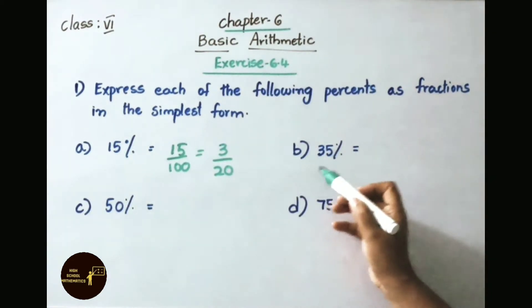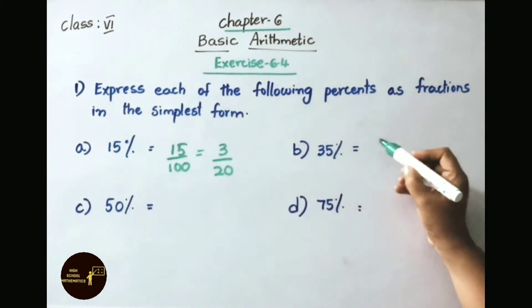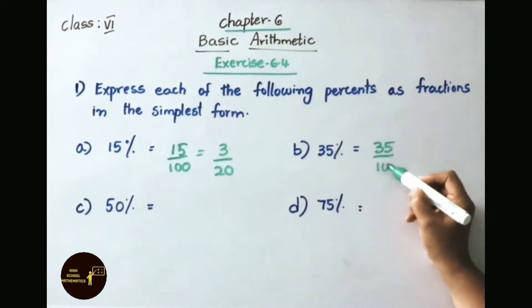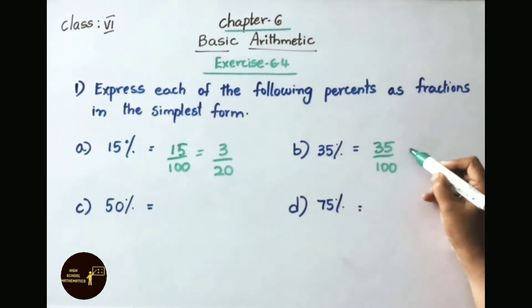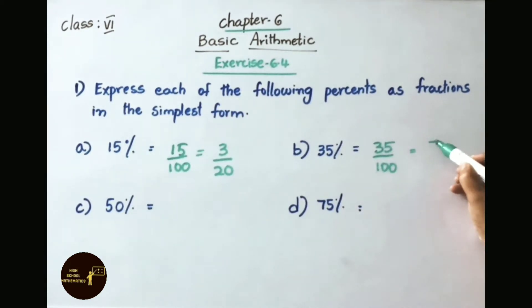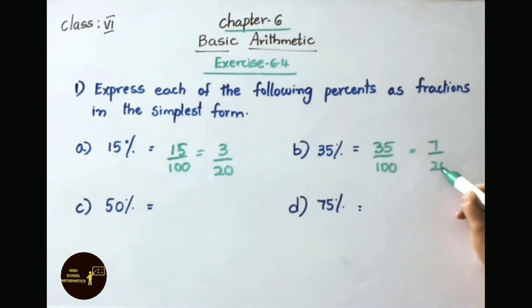Question B: 35 percent. That equals 35 by 100. Using the 5 times table: 35 is 7 times 5, and 100 is 20 times 5. So the answer is 7 by 20.